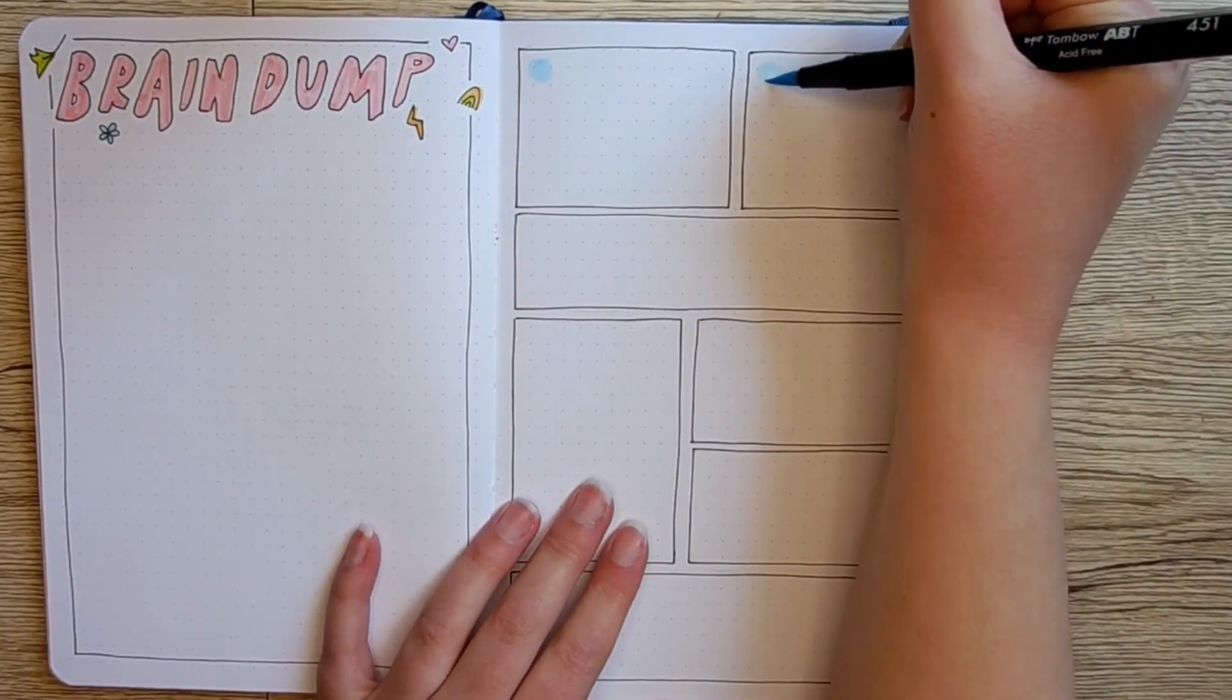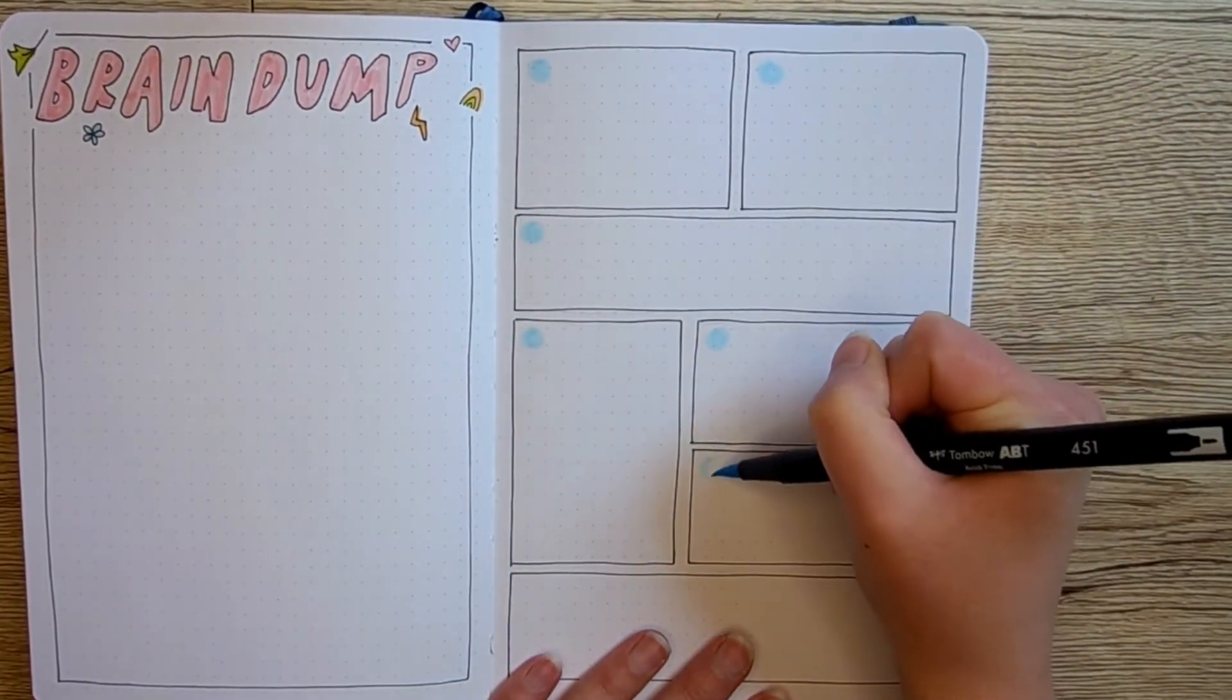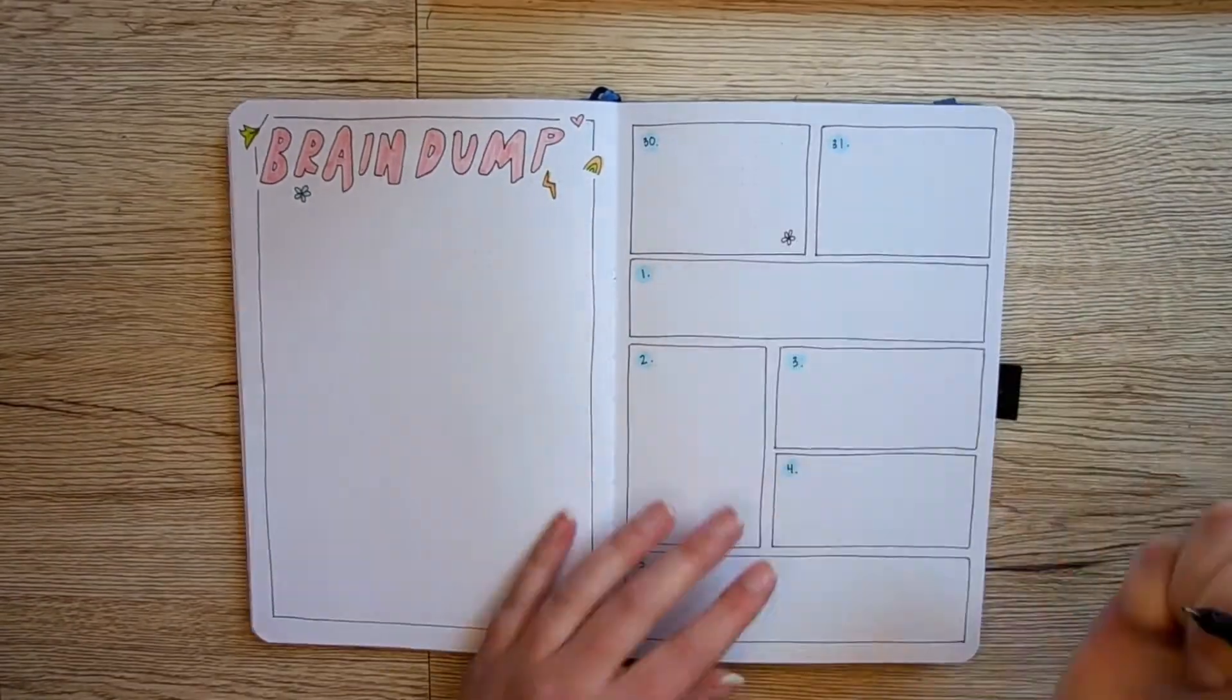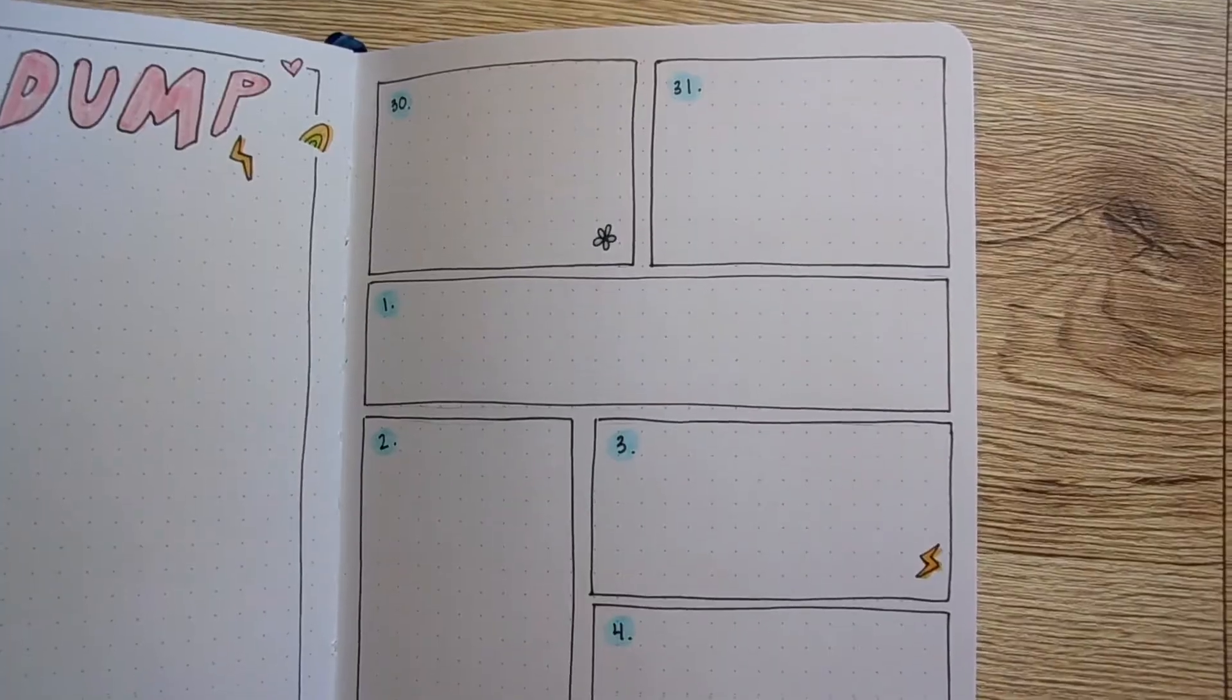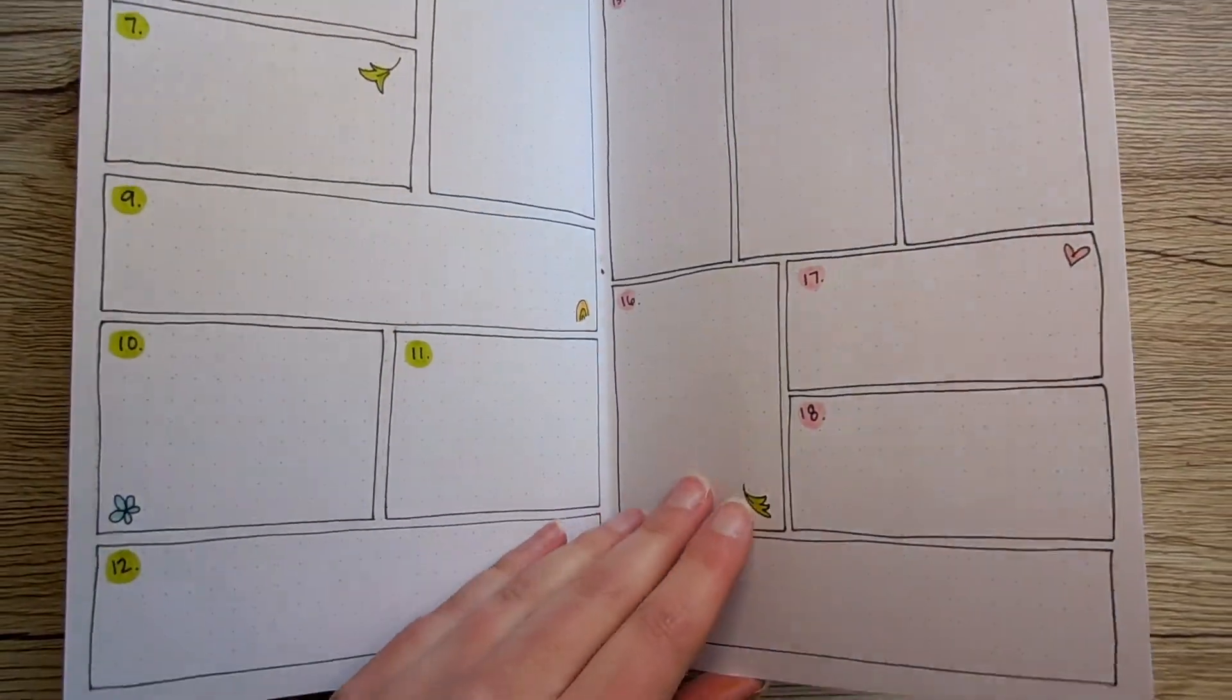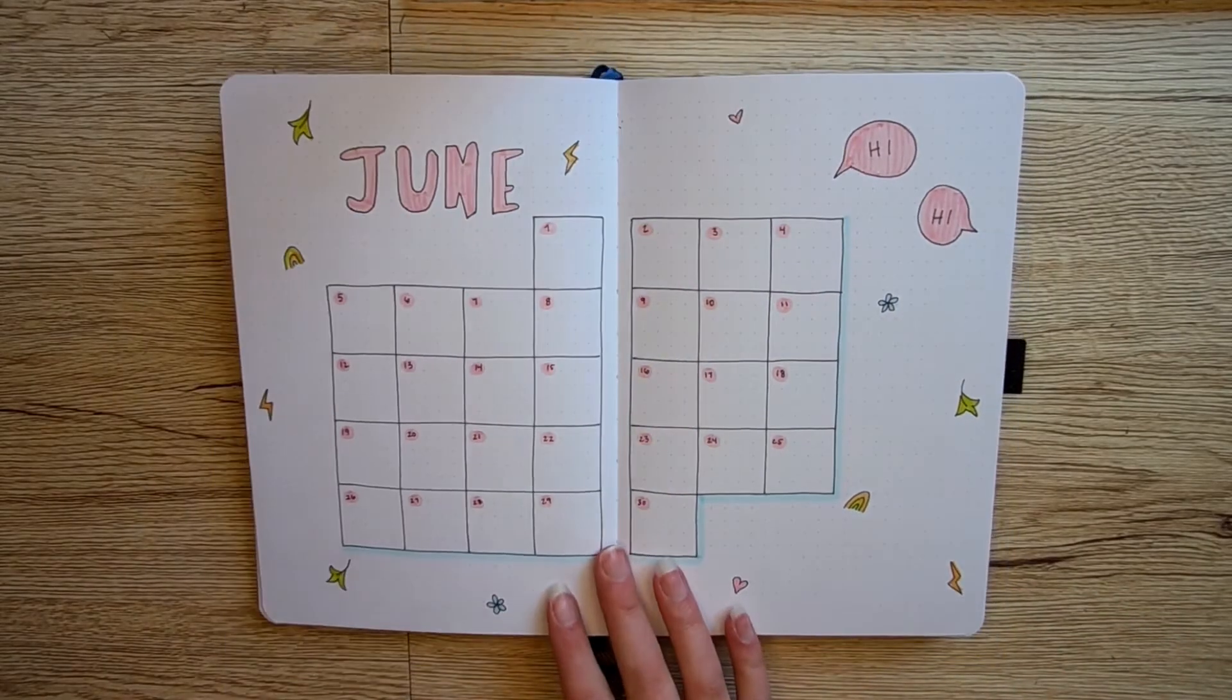I don't want to make the weekly spreads too heavily influenced by the theme and then make them not as functional for me, but I think this is going to work really well and also be a bit different from what I've done the rest of the year. I also decided to go in and draw a few of the doodles as well. My camera did die and cut me off, but I've drawn plenty of these doodles throughout the spread. I'm really happy with how these weekly spreads turned out. I think that they really fit in with this month's theme really well.